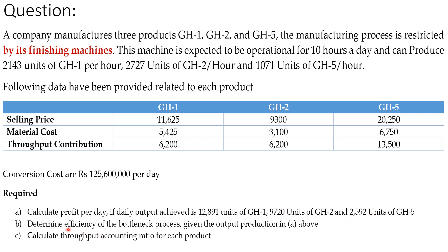You are also asked to determine the efficiency of the bottleneck process given the output in part A, and to calculate the throughput accounting ratio for each product. Now let's move to the solution so all these things become clear.